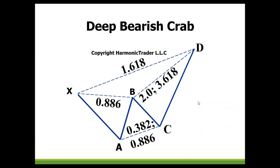The deep bearish crab is a W structure and must preserve the W formation — an X point, an A point, a B point that does not exceed X. For the deep crab, the B point has got to be at an 0.886. Then your C point cannot exceed A, and all that sets up for a big 1.618 extension up to D. Notice also the BC measurements can be a 2.0 or as much as a 3.618, but it's still going to be an extreme structure.